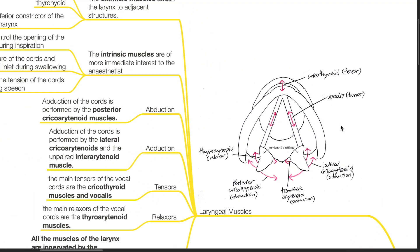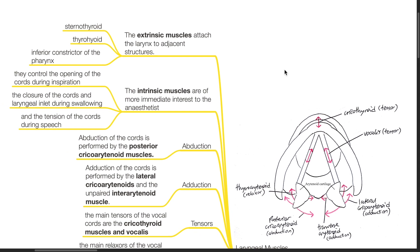The laryngeal muscles consist of extrinsic and intrinsic muscles. The extrinsic muscles attach the larynx to adjacent structures; examples include the sternothyroid, thyrohyoid, and inferior constrictor of the pharynx. The intrinsic muscles are of more immediate interest to the anaesthetist as they control the opening of the vocal cords during inspiration, the closure of the vocal cords and the laryngeal inlet during swallowing, and the tension of the cords during speech.